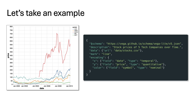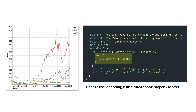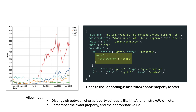Let's take the example of our friend Alice, who is working on a line chart showing some stock trends for top tech companies using Vega-Lite. Now she wants to start customizing this chart by moving the x-axis title to the left. To do this, Alice has to change the encoding.x.axis.titleAnchor property to the value 'start'. Even this simple edit is not trivial — Alice must be able to distinguish between chart property concepts like title anchor, stroke width, etc., and remember the exact property and appropriate value required to make the edit.